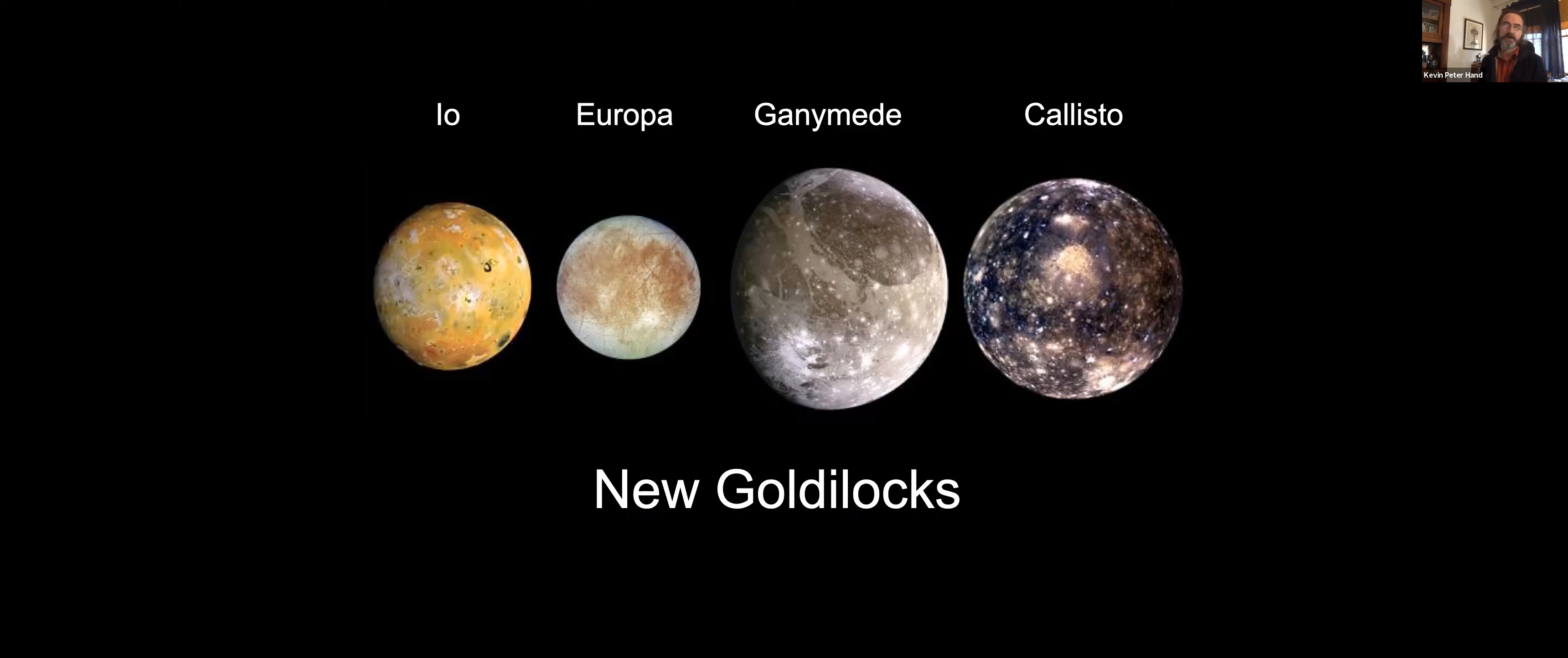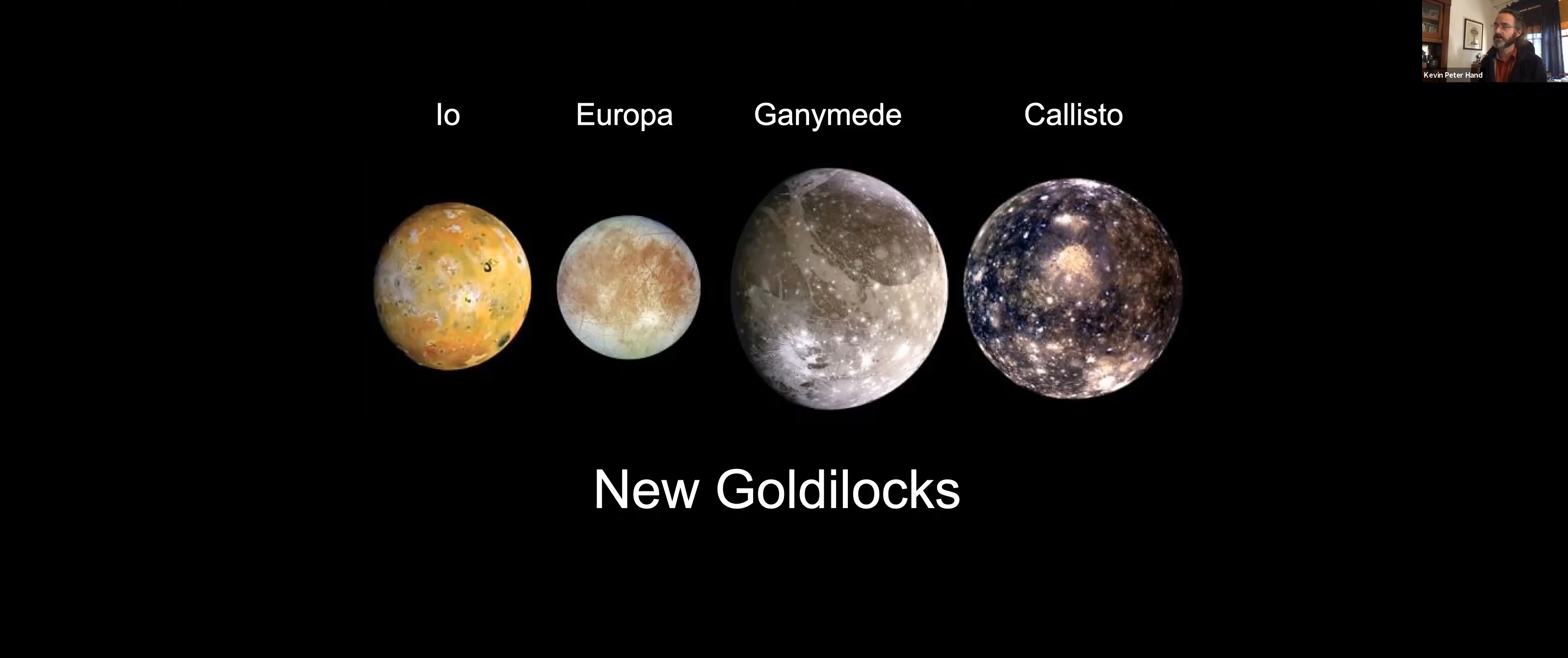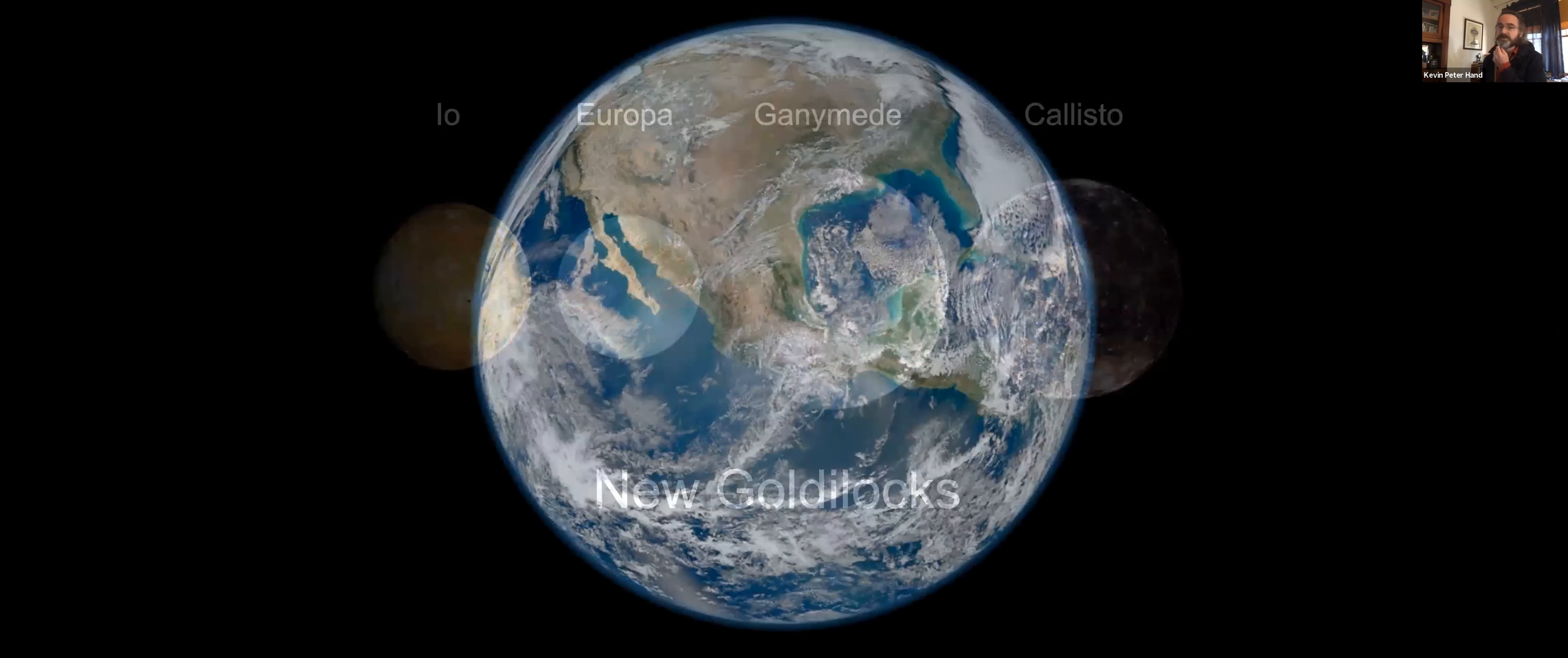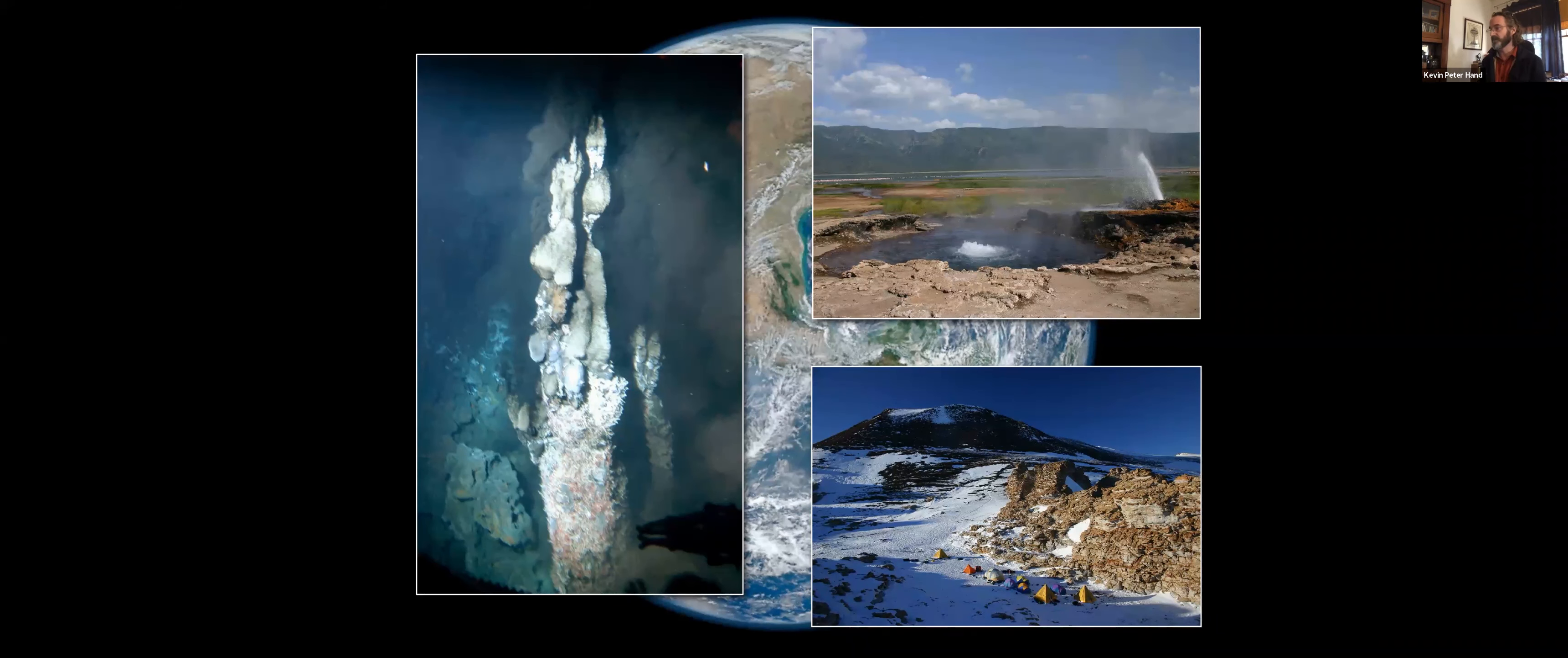We think that that ocean on Europa is cycling through a rocky seafloor, which then leaches out many of the elements that are needed for life. And some of that seafloor energy via hydrothermal vents may also help power, may give rise to life and sustain life through time. Much of the interest and excitement about these ocean worlds is because if we've learned anything from life on Earth, it's that where you find liquid water, you find life.